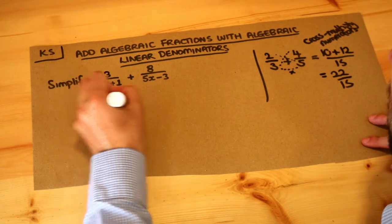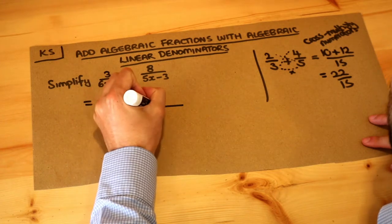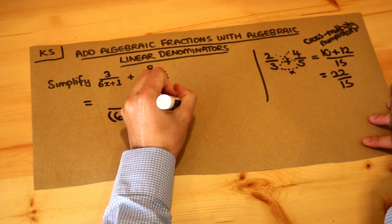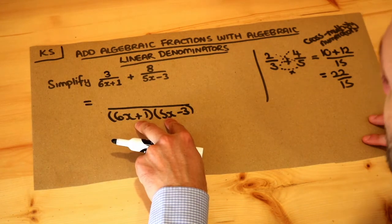So we're going to multiply the denominators first, so 6x+1 times 5x-3. And in case you're wondering, should we multiply these out? There's no reason to multiply out the brackets. It's no simpler expanding it out than leaving it in factorized form like that.